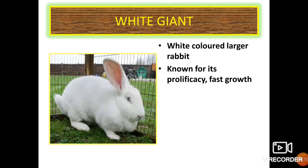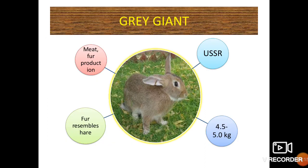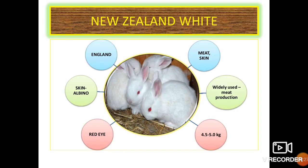The White Giant is known for its prolificacy and fast growth. The Grey Giant has its origin in the USSR, with a matured body weight of 4.5 to 5 kg; the fur resembles hare fur and it is used for meat and fur production. The New Zealand White has its origin in England; the skin is albino with red eyes due to lack of melanin pigment. Matured body weight is 4.5 to 5 kg and it is widely used for meat production.